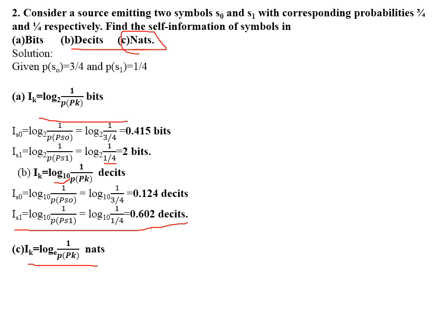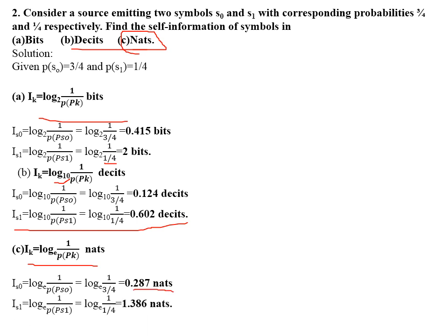For information in nats, the base should be e. Using I(k) = logₑ(1/p(k)): I(S0) = logₑ(4/3) = 0.287 nats, and I(S1) = logₑ(4/1) = 1.386 nats. In all cases it holds true that lesser the probability, more is the information contained, regardless of the base. Theoretically, I is inversely proportional to p.